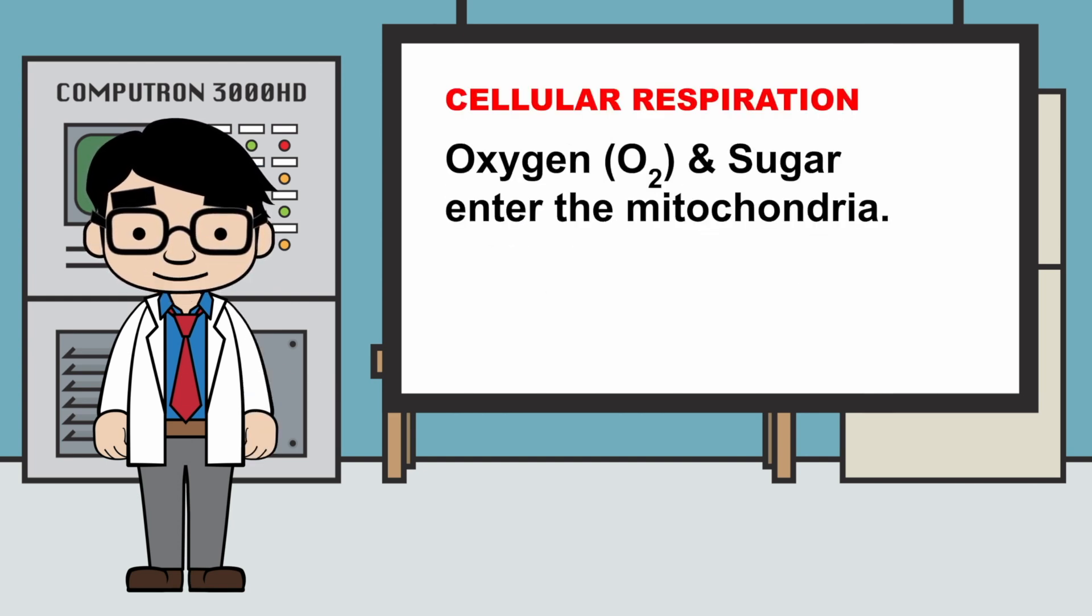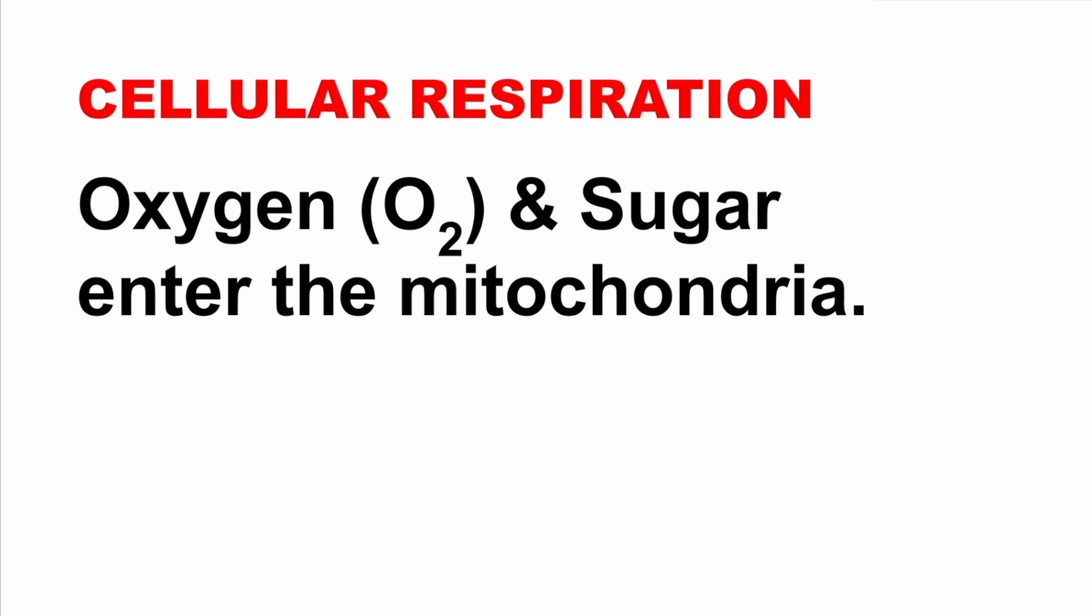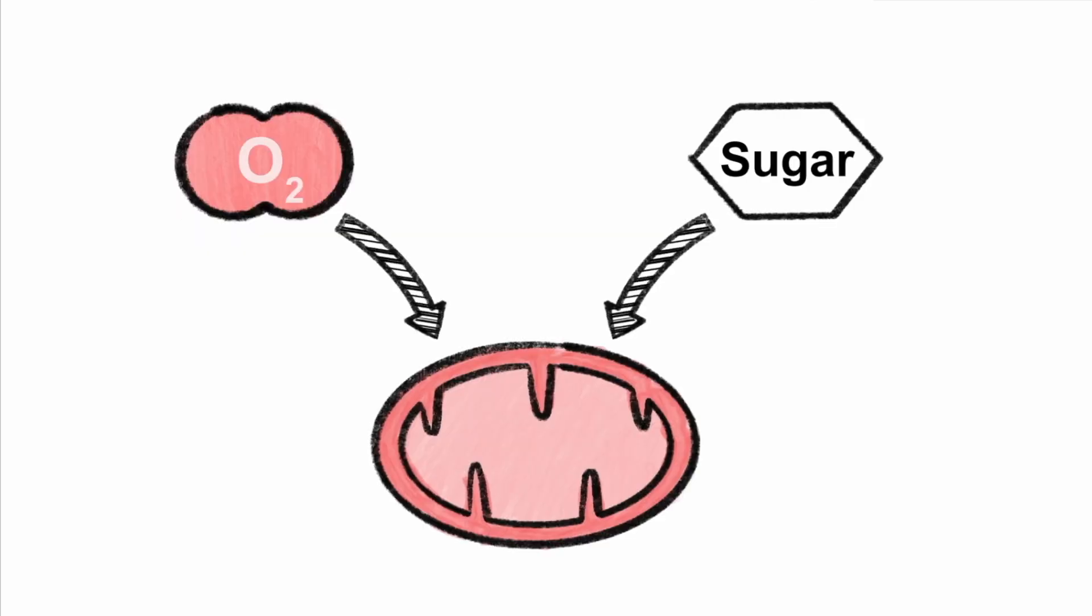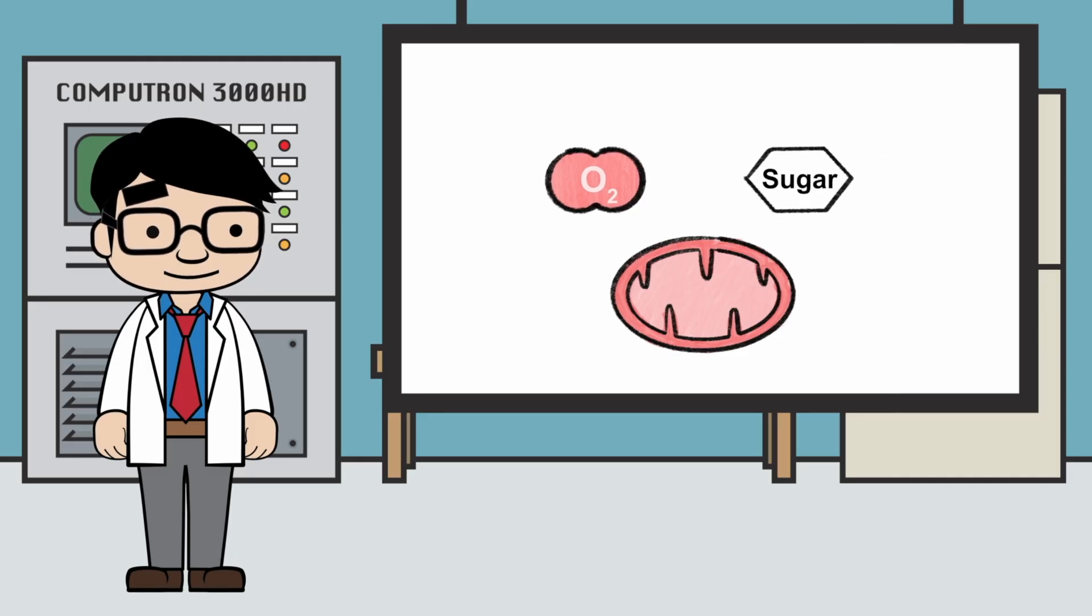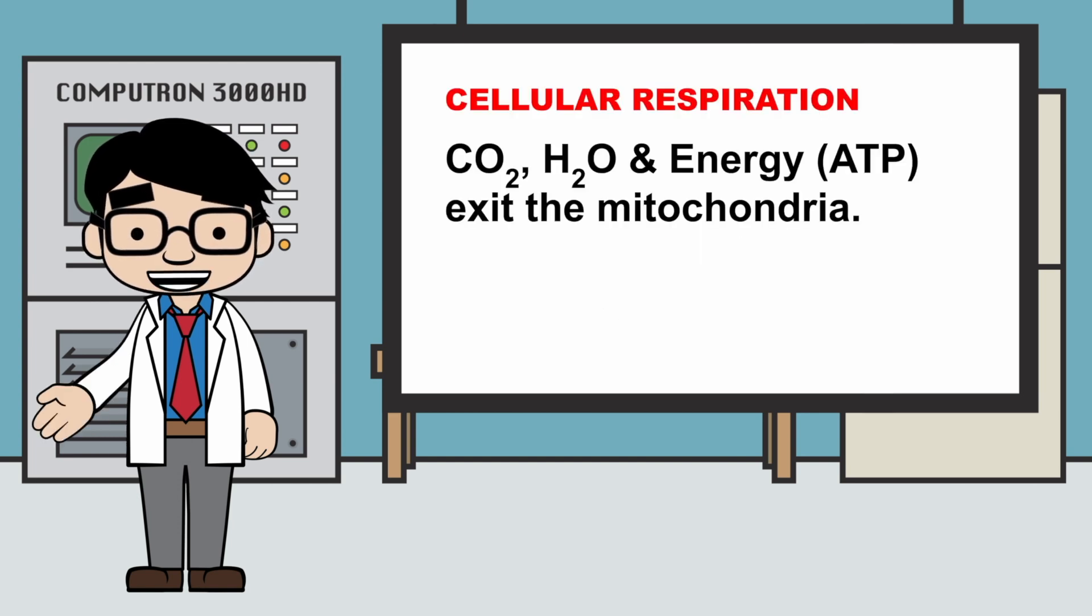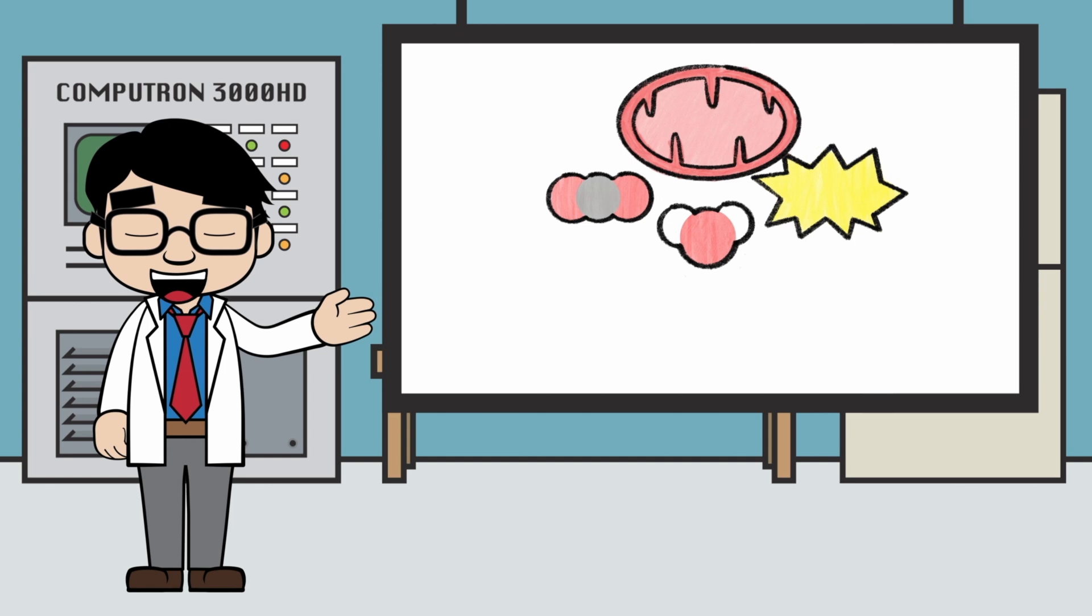Cellular respiration starts with oxygen and sugar entering the mitochondria. Here's oxygen and here is sugar. After they enter the mitochondria, a series of chemical reactions will happen. And CO2, H2O, and energy in the form of ATP will come out.